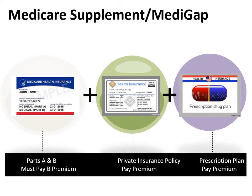From private insurance companies, you can purchase Medicare supplement insurance policies, also referred to as Medigap policies. These policies cover Medicare's deductibles and co-payments. You pay a monthly premium — the more coverage you elect, the higher the monthly premium. You must have both Part A and Part B to purchase a Medicare supplement policy, and you continue to pay your Part B premium. Medicare supplement policies do not cover Part D prescription drugs.